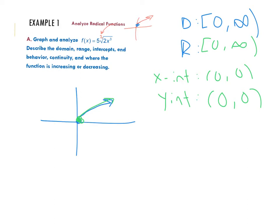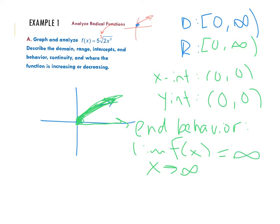End behavior, now this graph is only going in one direction here. So I only have to give one limit statement. I would say the limit of f of x as x approaches positive infinity. We're going this way. So what we're saying is as my x values approach infinity, what's happening to my line. Well, my line looks like it's going to approach positive infinity.